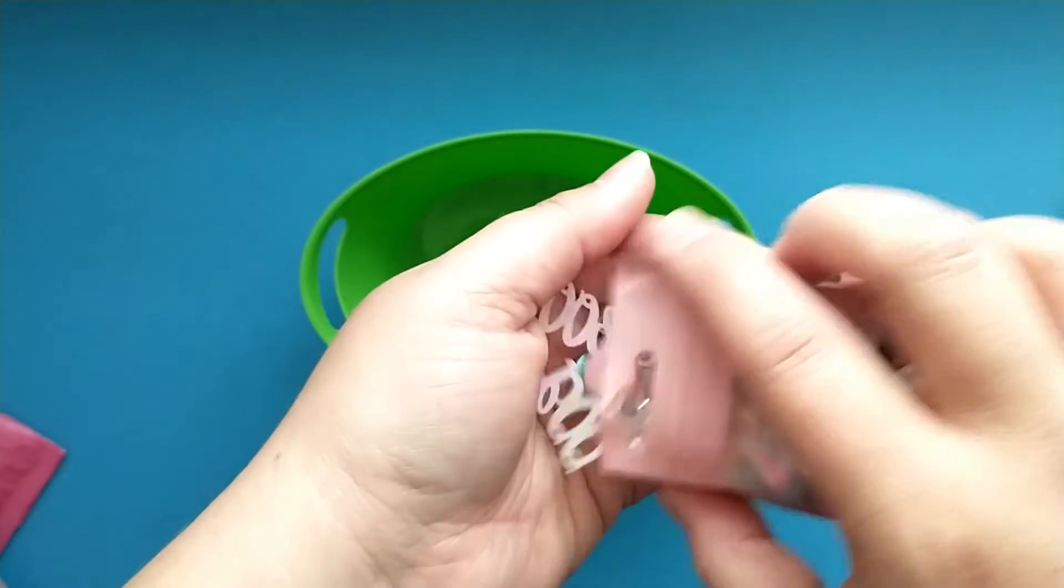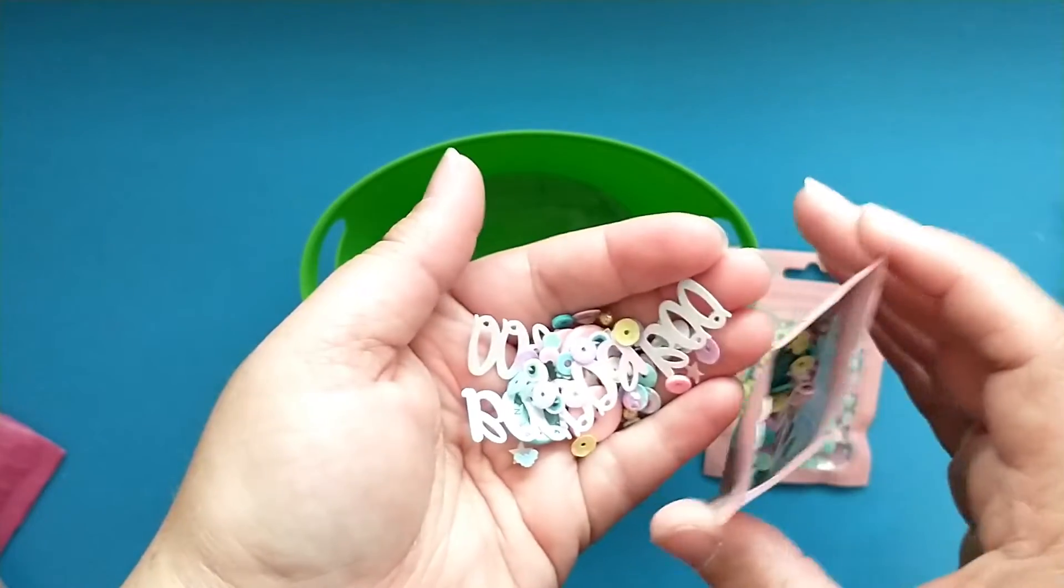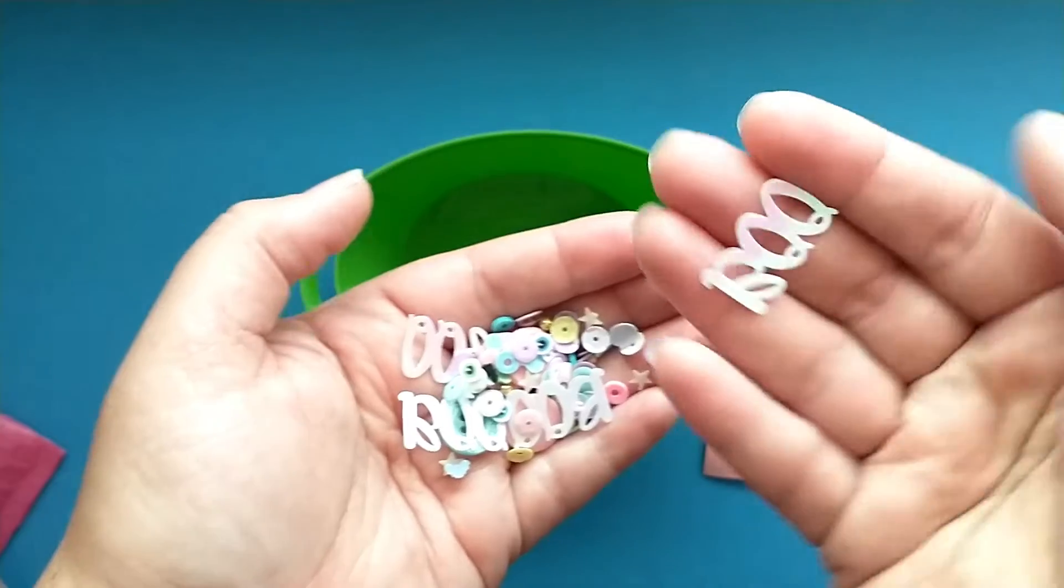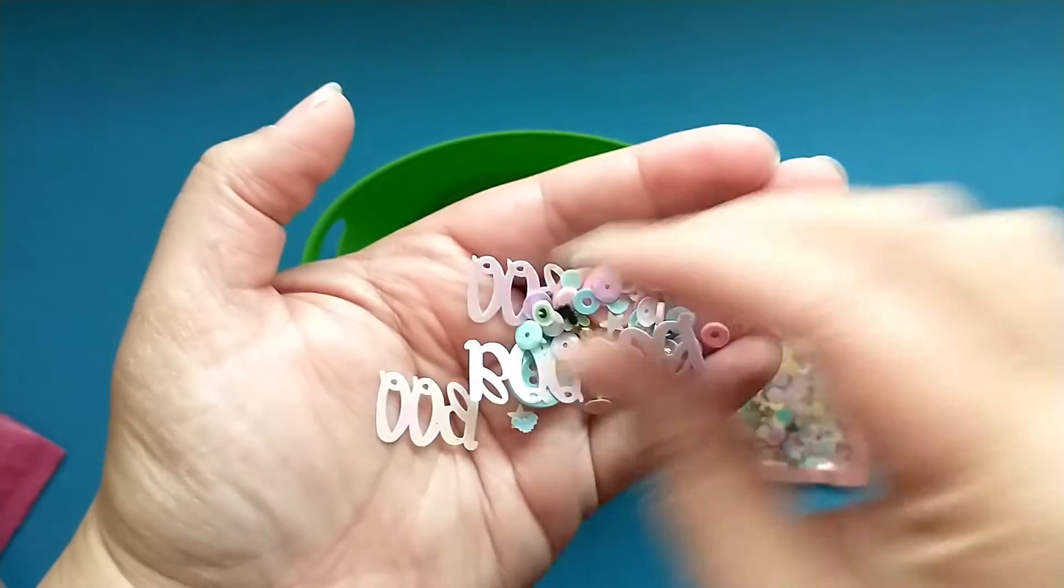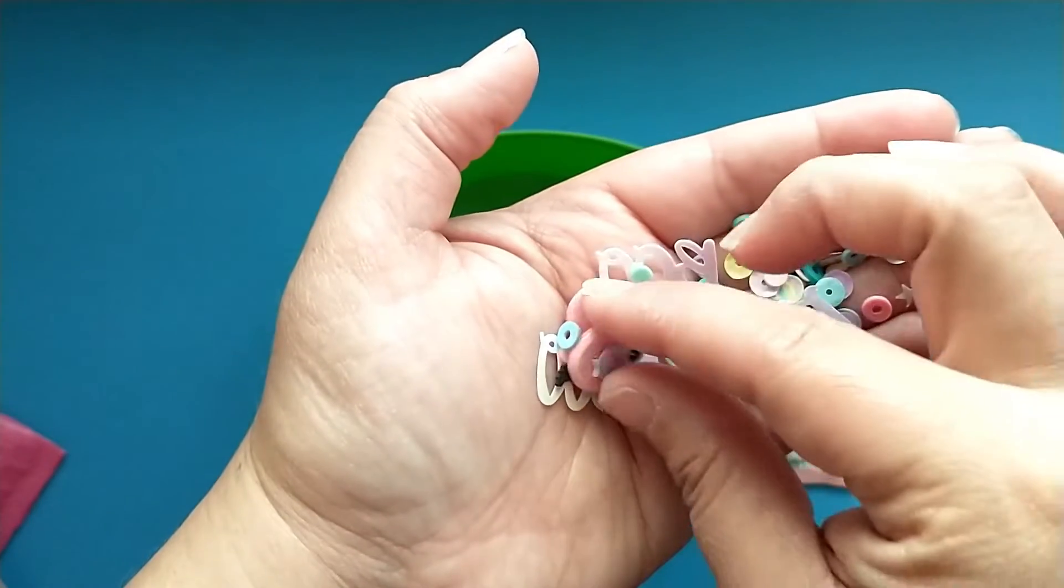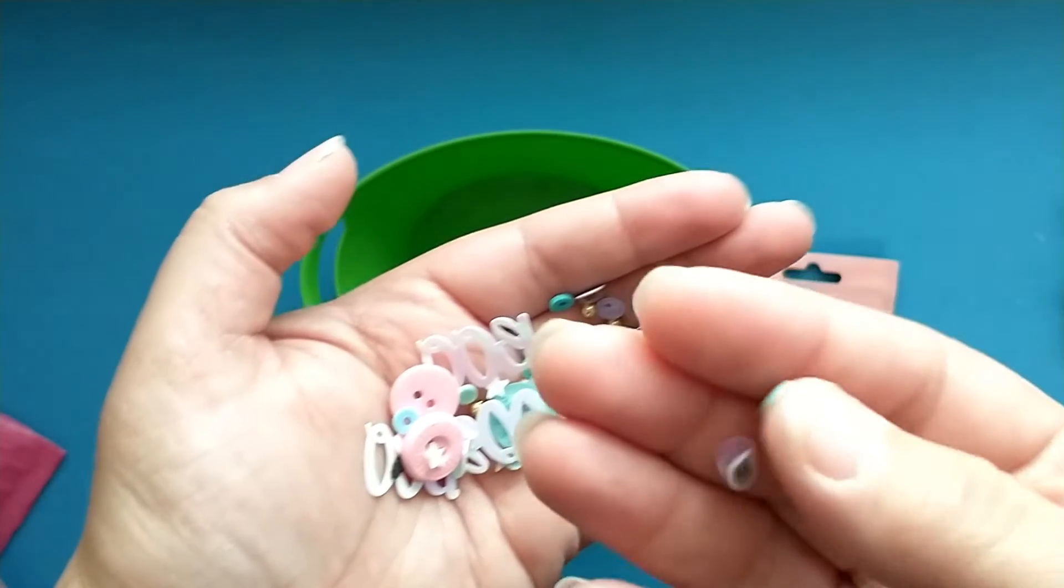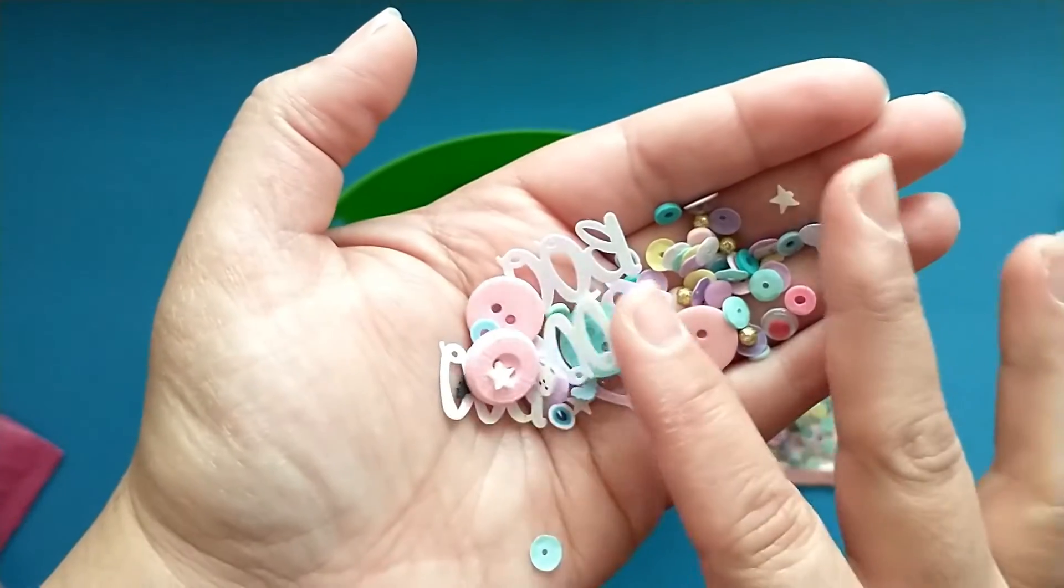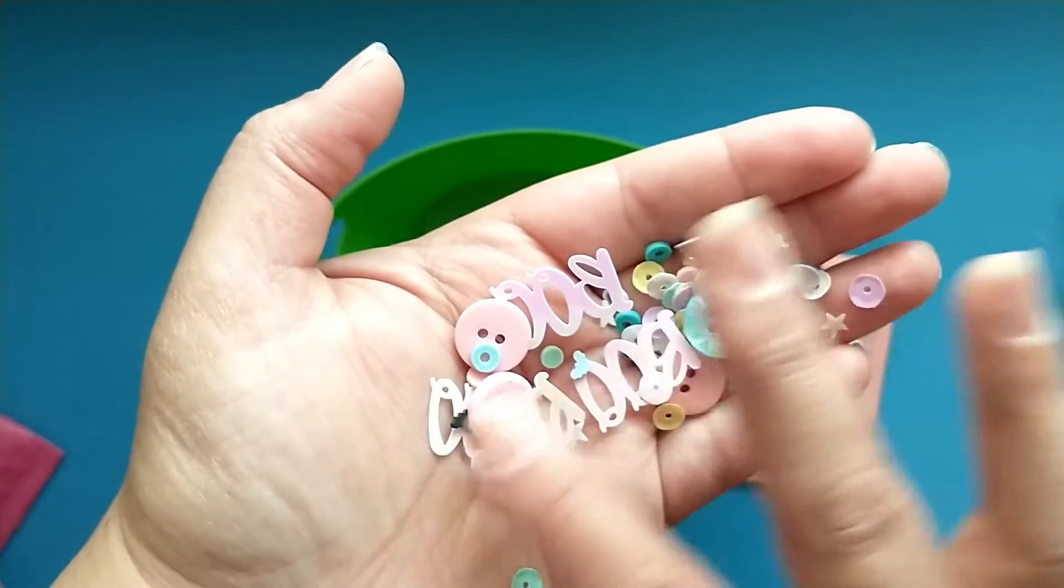So I thought this was so fun to go with the pastel Halloween. She has these boo sequins, then you have like these little eyeball clay bits, and then there are some little gold balls and buttons.